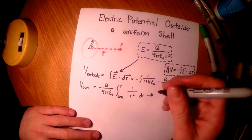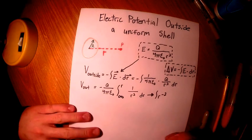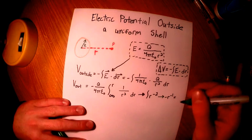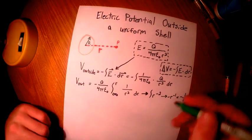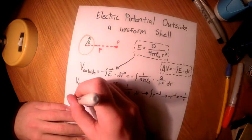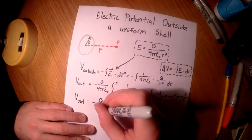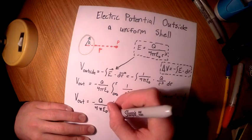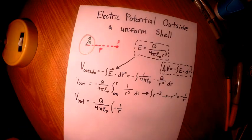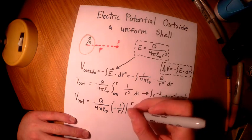Taking the integral of 1 over r squared, we're left with r to the negative 2. We can rewrite that — once you take the integral it becomes negative r to the negative 1, which is the same as negative 1 over r. We then carry down our constants and plug in negative 1 over r, evaluated from infinity to r.